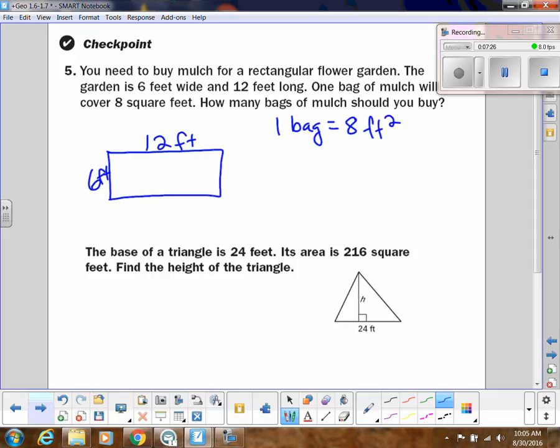How many bags of mulch should you buy? All right, so basically we just need to find the area, right? So this is 6 times 12, which will be 72 square feet. And then we know that 8 square feet is 1 bag, so let's do 72 square feet divided by 8 square feet. They won't always come out this nicely, but that would be 9, so we know we need exactly 9 bags.